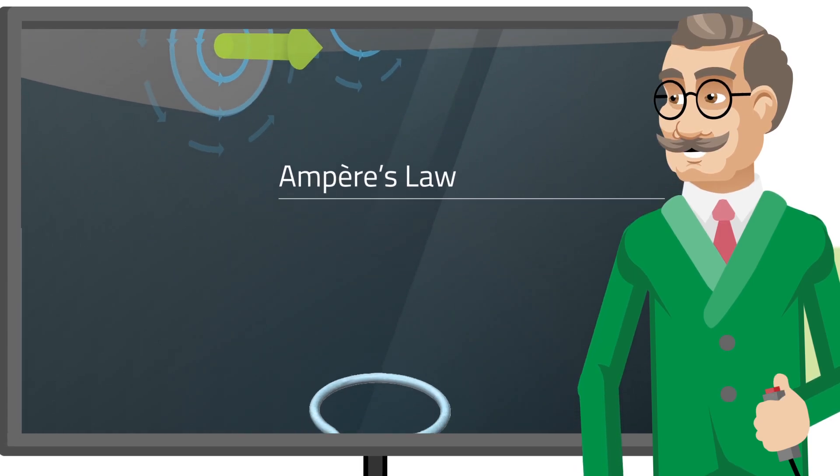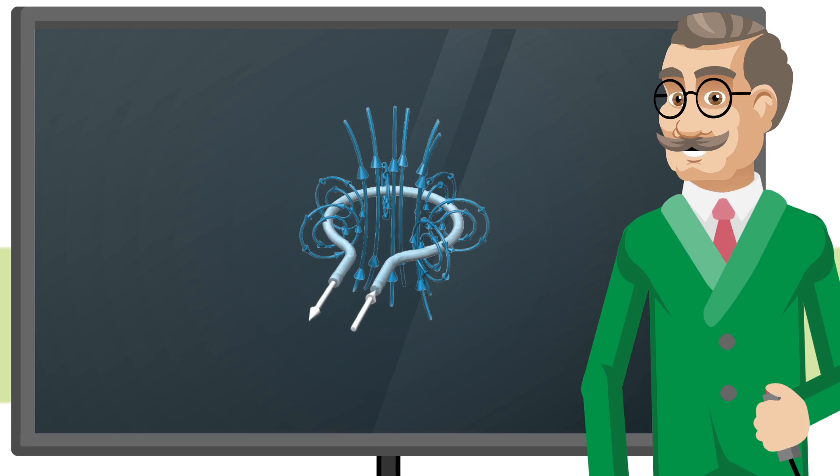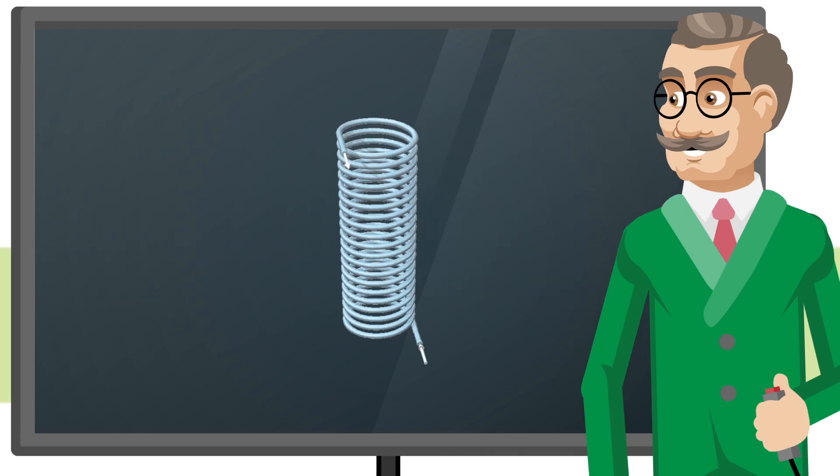Ampère also found out that when a straight piece of copper wire is bent in the shape of a turn, the magnetic field lines at the inside add up. By putting a number of turns in series, we have a coil.